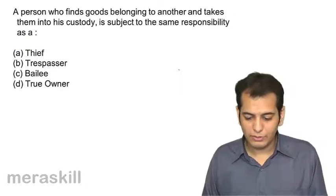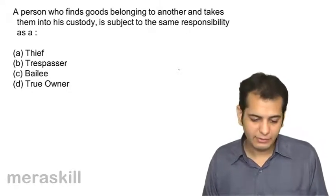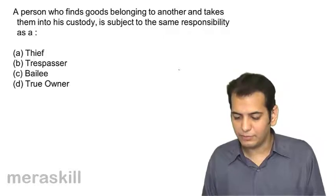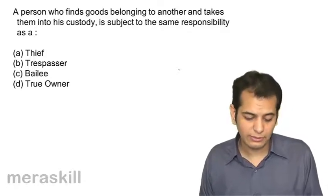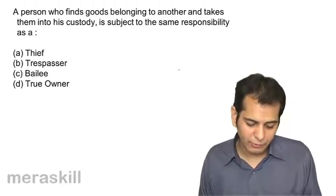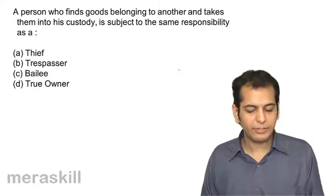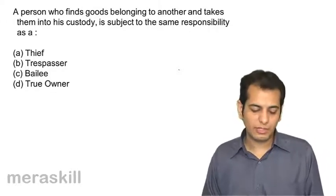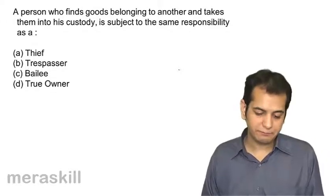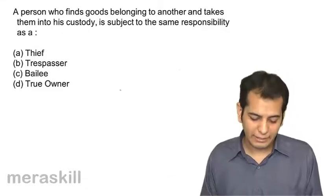A person who finds goods belonging to another and takes them into his custody is subject to the same responsibility as: A) a thief, B) trespasser, C) Bailee, D) true owner. This is pretty simple — the finder of goods is a Bailee.